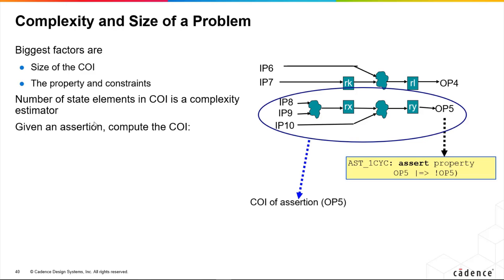What the tool will do is, given any assertion it's evaluating, it will compute what the COI is - the structural fanning cone, which is simple to do - and then it will not consider anything else in the design. This is why we can use formal on partial designs. We don't need the entire design complete to verify something.